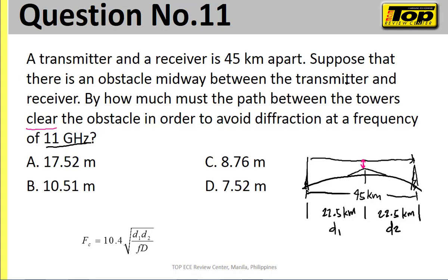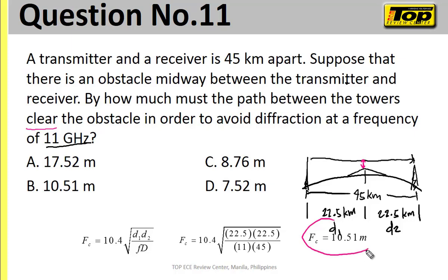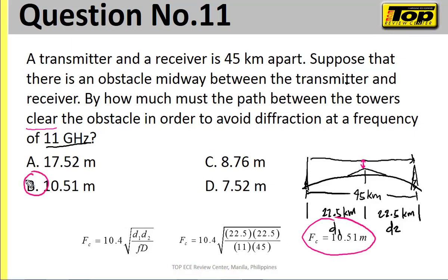D is 45 kilometers and F is 11 gigahertz. When we substitute those values, we drop the units — they're already built into the equation. So 22.5 doesn't carry kilometers, 11 doesn't carry gigahertz, and 45 doesn't carry kilometers. The answer for this problem is 10.5 meters — that is letter B. Easy, no difficulty at all. That's number 11.